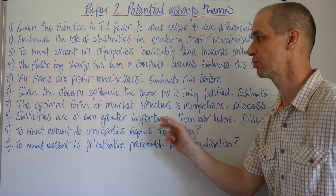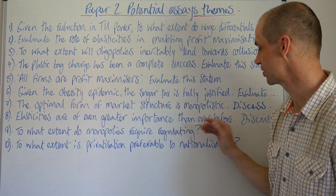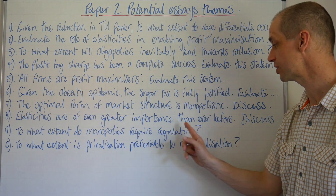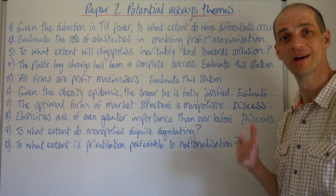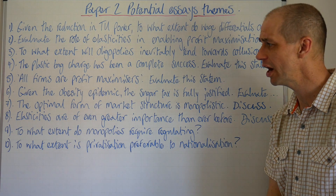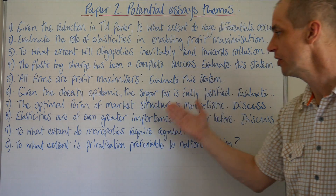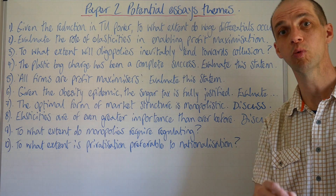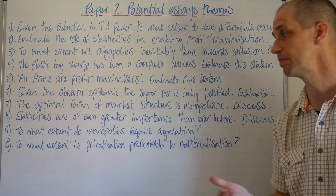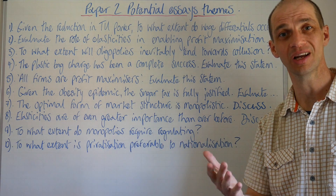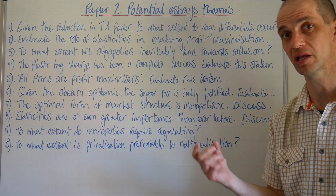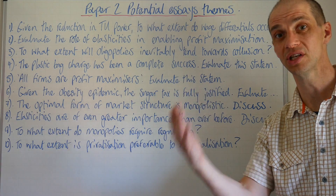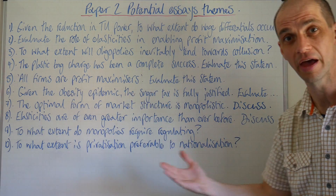Number eight: elasticities are of even greater importance than ever before — discuss. Why would this be the case? Think about the information firms now have access to about what we want to buy and when. For example, Uber can plug into data on how many people are opening their app at any given time, enabling them to determine pricing structure very effectively.